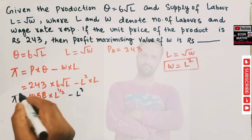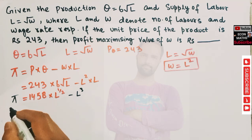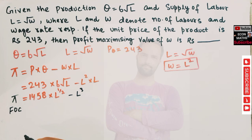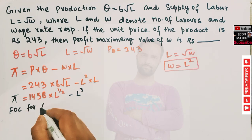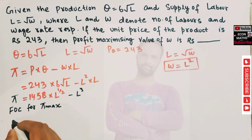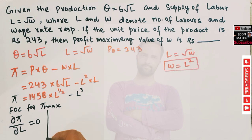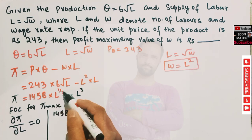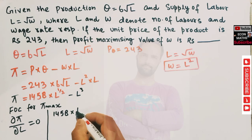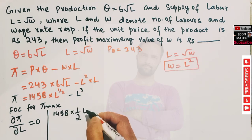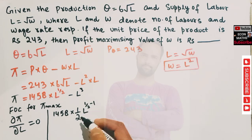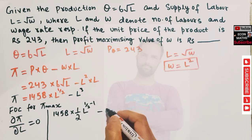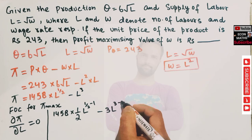The first order condition for profit maximization requires that the derivative of the profit function with respect to L equals zero. Differentiating: the derivative of L^(1/2) gives (1/2)L^(−1/2) as coefficient, and the derivative of L³ gives 3L² by the power function rule.